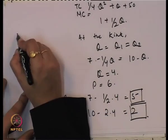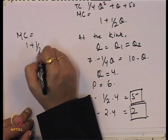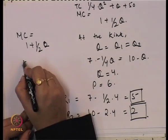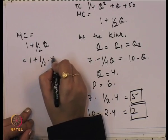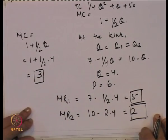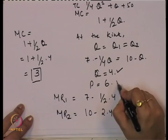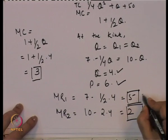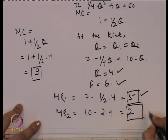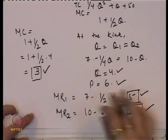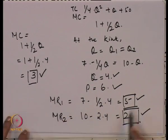From the total cost function TC = (1/4)Q² + Q + 50, we get MC = 1 + (1/2)Q = 1 + (1/2)(4) = 3. We can confirm that MC = 3 falls in the gap between MR1 = 5 and MR2 = 2, proving that MC lies in the vertical segment between the two marginal revenue curves. This confirms the kinked demand curve model's price rigidity result.